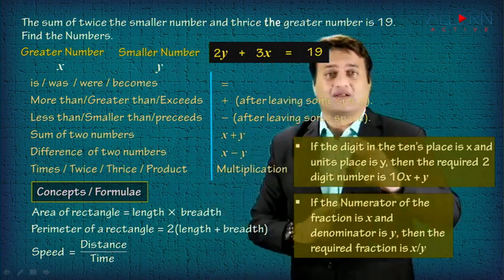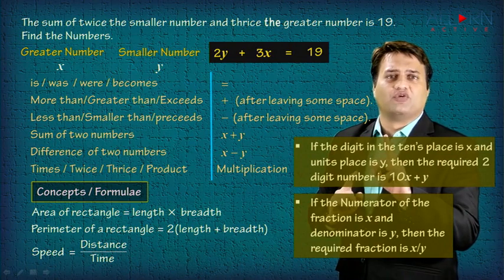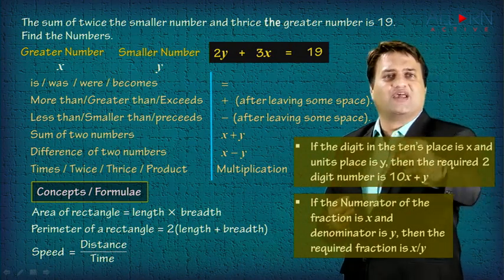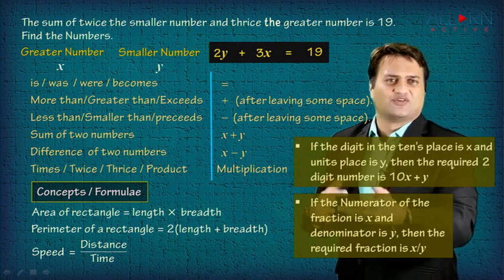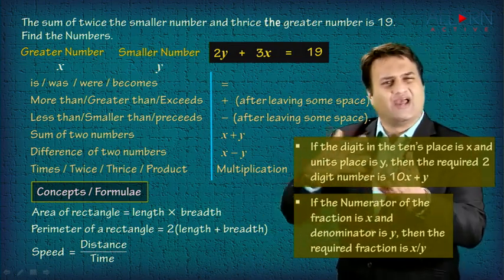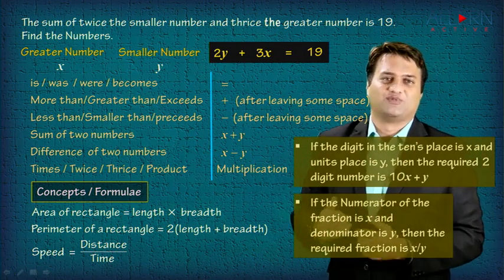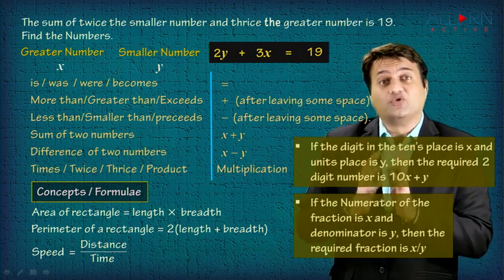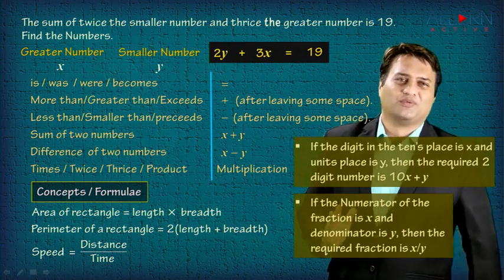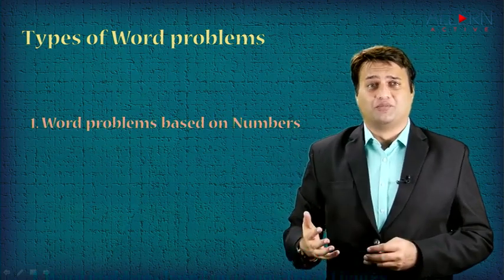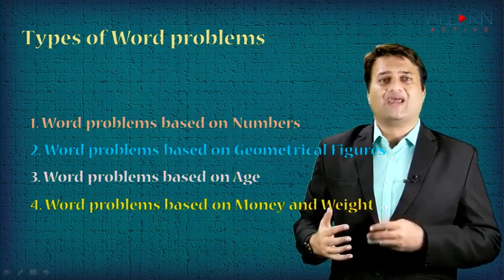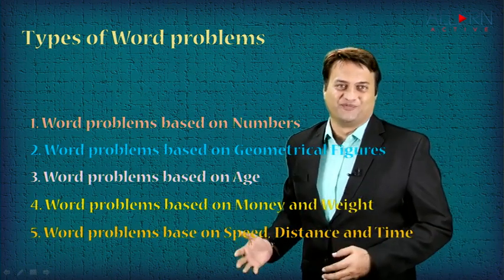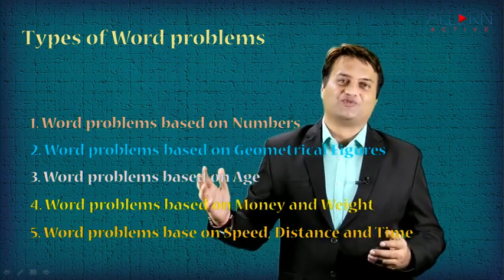What is very important is the start: you read the sum, read the last statement, and see what is to be found out. If the question is 'find the fraction', start by letting the numerator be x and denominator be y. For a two-digit number sum, let the digit in tens place be x and units place be y, so the number becomes 10x plus y or 10y plus x. This is how you approach it — equation formation is not a problem at all. There are different types of word problems in this chapter: word problems based on numbers, geometrical figures, age, money and weight, and speed, distance and time.